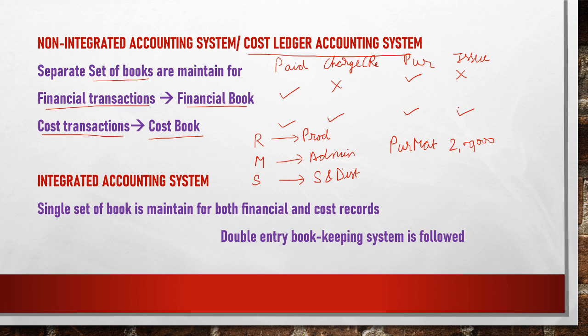When we merge these transactions into a single book to record finance and cost-related transactions, we maintain an integrated accounting system, where a single book is maintained for all monetary or business-related transactions. The rule of double-entry bookkeeping is followed to record all transactions whether in a non-integrated or integrated accounting system.